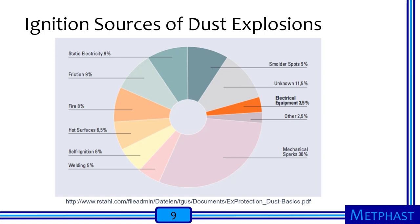A variety of ignition sources have been identified for dust explosions. Data from North American incidents shows mechanical sparks are the biggest source, followed by welding, self-ignition, hot surfaces, fires, friction, static electricity, and smolder spots — places where materials may be smoldering due to hot surfaces underneath or decomposing organic materials deep within a layer of dust. Electrical equipment can also contribute to ignition.